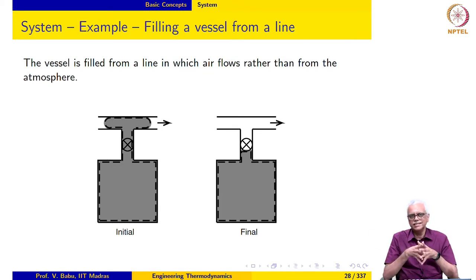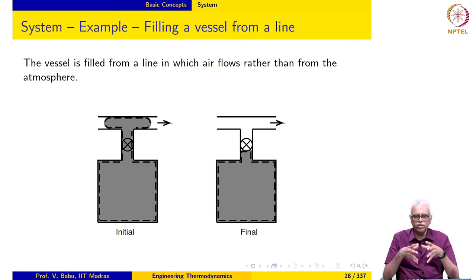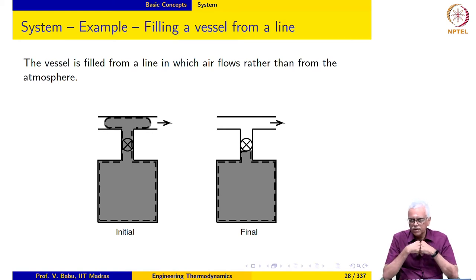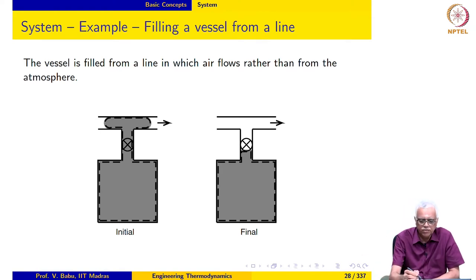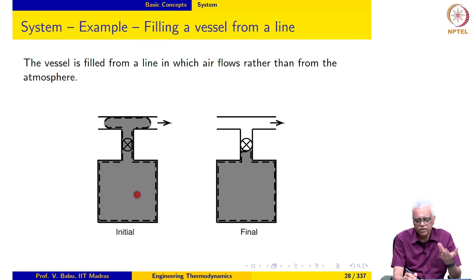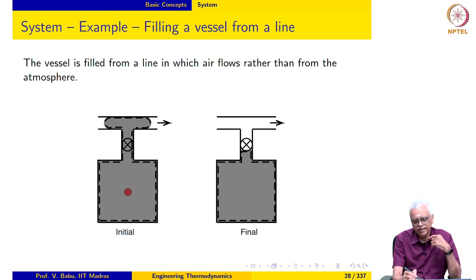There could be some mass inside the vessel to begin with — it could be evacuated or it need not be evacuated. And there is some amount of mass in the line which actually enters the vessel. So we define a system which encompasses both these masses. This is the mass that is waiting to enter the vessel, and this is the mass that may already be in the vessel. If the vessel is evacuated, this may be zero; otherwise it is non-zero. We take these two together and define that as our system.